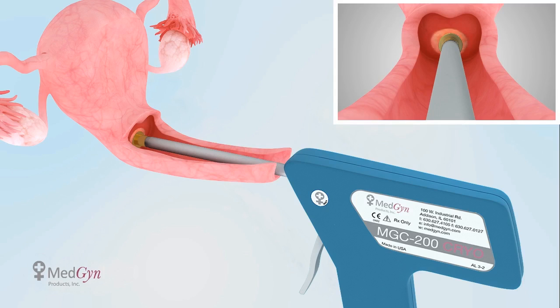To defrost, squeeze the trigger again and hold. Detach the probe once the tip is defrosted. Do not attempt to withdraw the probe prior to defrost.